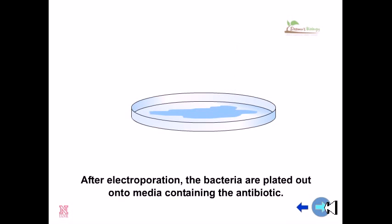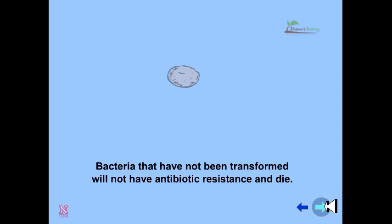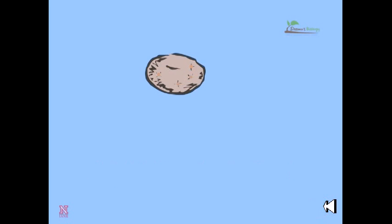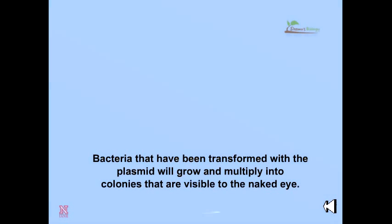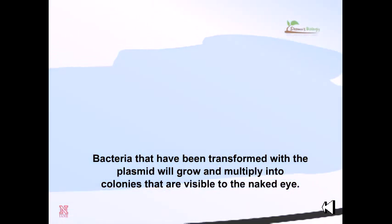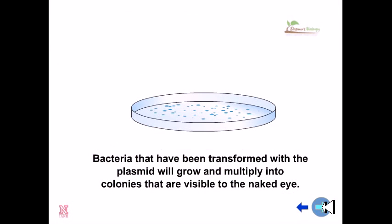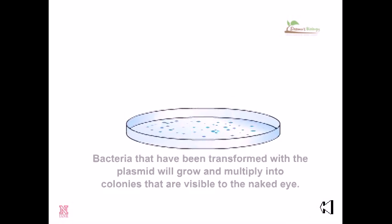The bacteria are plated out onto a medium containing a particular antibiotic against which resistance has been developed in those transgenic bacteria. Bacteria that have not been transformed will not have the antibiotic resistance genes and they will die. Bacteria that have been transformed with the plasmid will grow and multiply into colonies that are visible to the naked eye.